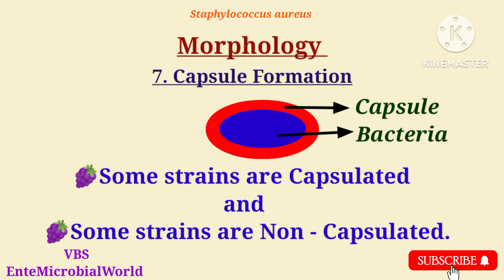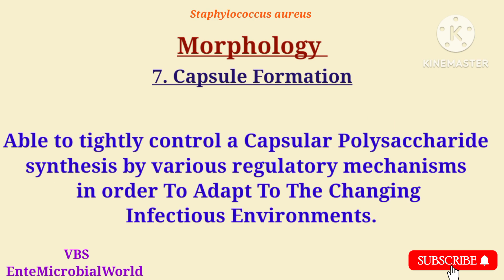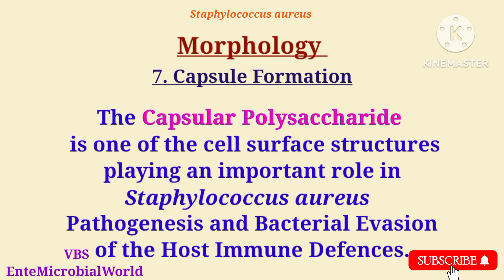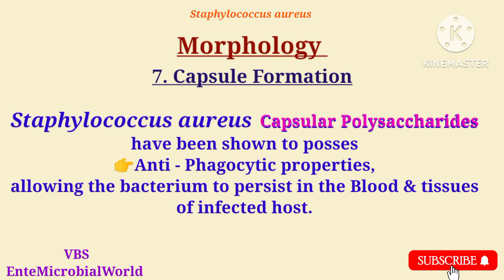In Staphylococcus aureus, some strains are capsulated and some strains are non-capsulated. But almost all Staphylococcus aureus strains contain a gene cluster encoding enzymes for the capsular serotypes. Staphylococcus aureus is able to tightly control capsular polysaccharide synthesis by various regulatory mechanisms in order to adapt to changing infectious environments. The capsular polysaccharide plays an important role in S. aureus pathogenesis and bacterial evasion of host immune defenses, and has been shown to possess antiphagocytic properties, allowing the bacterium to persist in the blood and tissues of infected hosts.